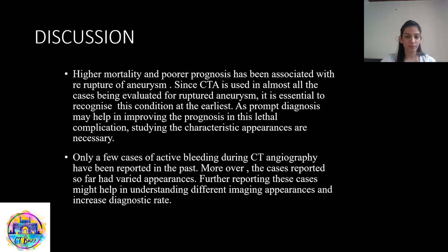High mortality and poor prognosis has been associated with re-rupture of aneurysm. Since CT angiography is used in almost all cases being evaluated for ruptured aneurysm, it is essential to recognize this condition at the earliest, as prompt diagnosis may help in improving prognosis and reducing complications. Studying the characteristic appearances are necessary. Only a few cases of active bleeding during CT angiography have been reported in the past, and the cases reported so far had varied appearances. Reporting these cases might help in understanding different imaging appearances and increase the diagnostic rate.